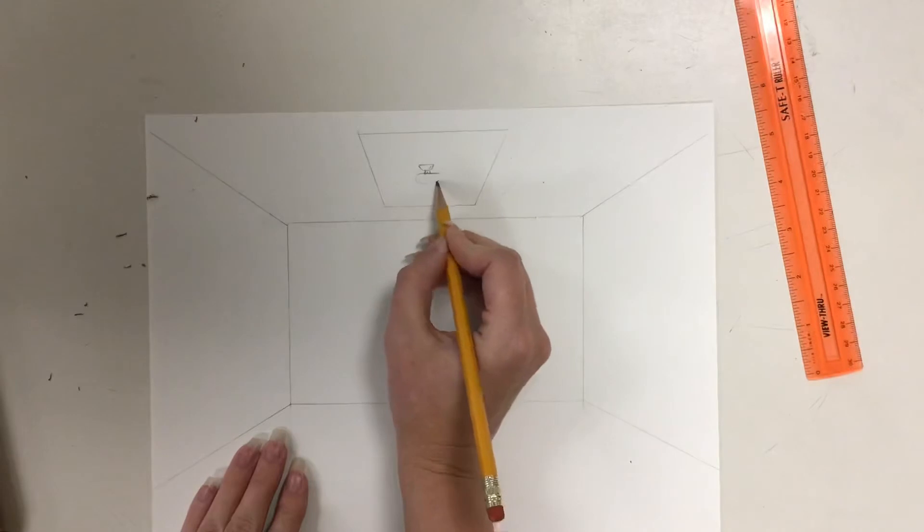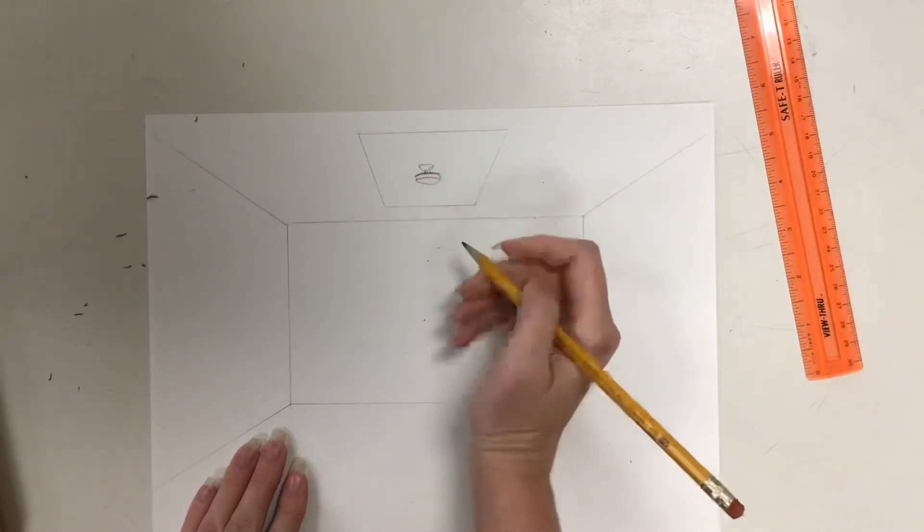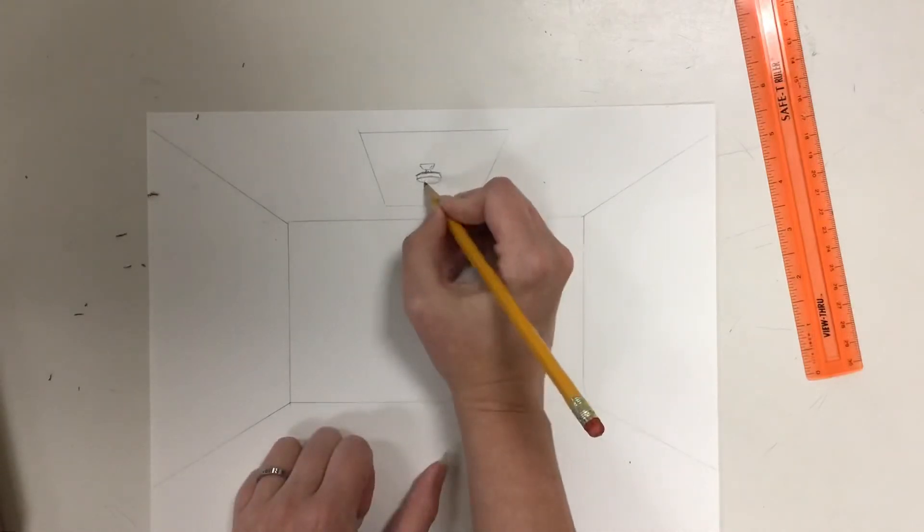But in one point perspective, circles kind of turn into ovals, like that. I'm going to draw this part coming down.